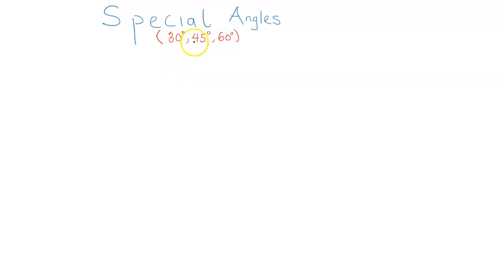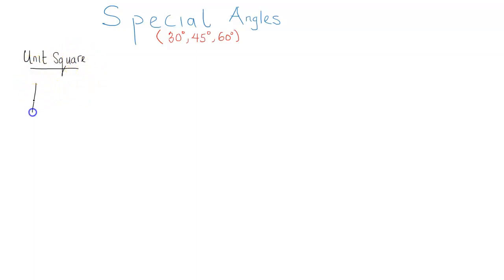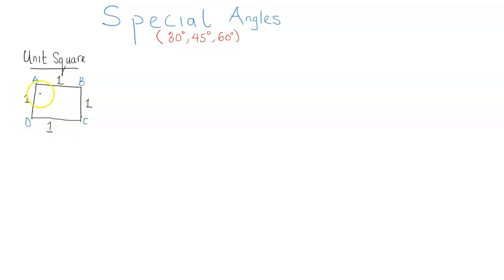First we are going to be focusing on 45 degrees. To do that we are going to be needing a unit square. A unit square is a square with sides of one unit. Being a quadrilateral, the sum of angles in this square is 360 degrees, and of course each one is 90 degrees, so we have four right angles here.